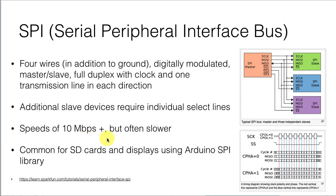SPI can achieve speeds of more than 10 million bits per second — 10 million baud — which is about 100 times faster than a standard serial connection, though it's often slower depending on what the interface devices are. This is a common way to interface with SD cards for saving data, or displays, using the Arduino SPI library.